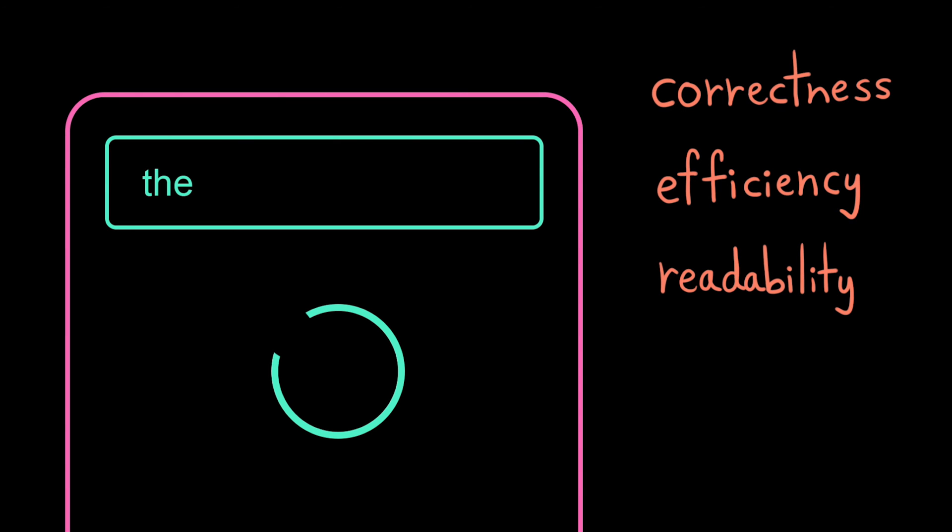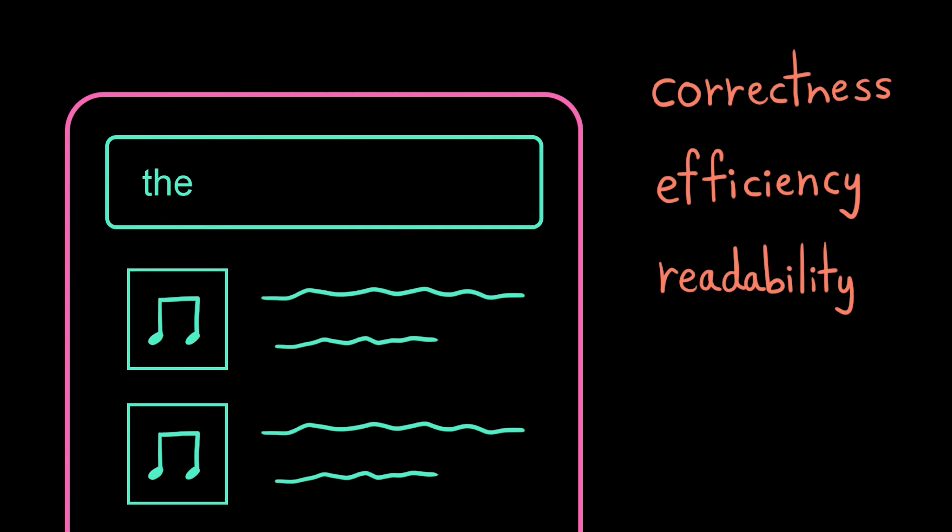In this case, I might choose to sacrifice some of the correctness in order to get efficiency. So instead of looking for all of the songs that have the word the, I might choose the 20 most common and say that's good enough.